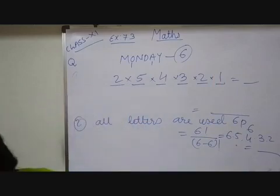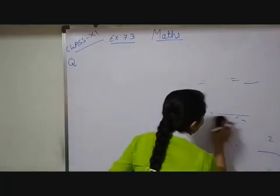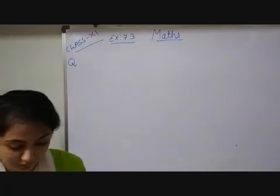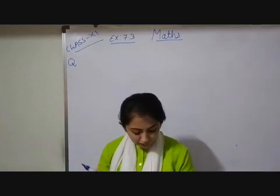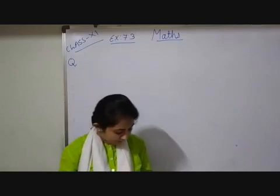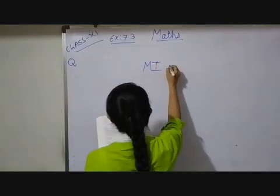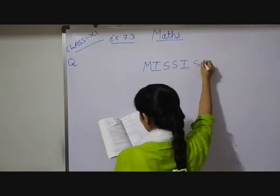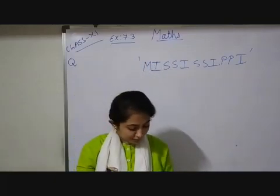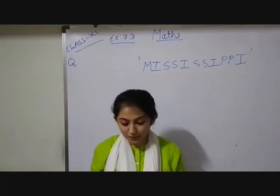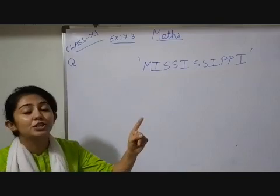The next question is very important. In how many of the distinct permutations of the letters in the word MISSISSIPPI do the four I's not come together? The word given is MISSISSIPPI. They are asking that I have to do arrangements in such a manner that the four I's should not come together.